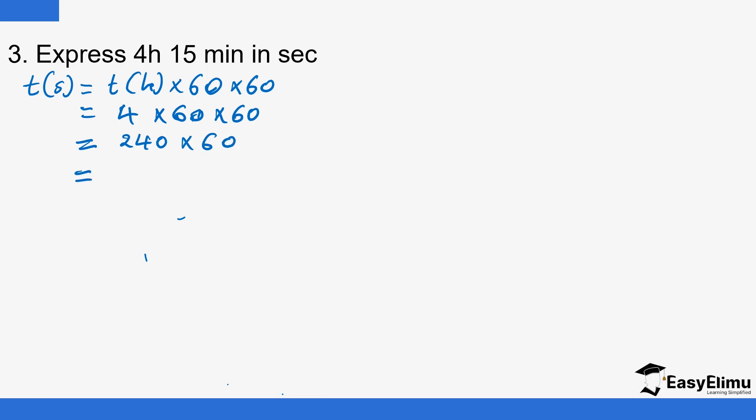So 240 times 60 - we multiply 24 by 6, then add the two zeros. This gives us t1 in seconds, which is 14,400 seconds for the 4 hours.